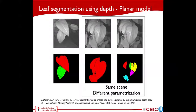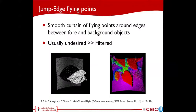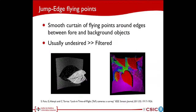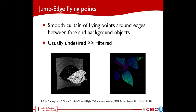In order to minimize the segmentation problem and better identify the different leaves of a plant, our approach takes into account the appearance of what is called the jump-edge flying points. Jump-edge flying points, a characteristic trait of time-of-flight cameras, are usually undesired points and therefore are filtered out. They are smooth curtains of flying points around the edges between fore and background objects. Identifying such points can give us information about the possible contour of the leaves. For more details, see the article by Fochetau, 'Lock-in Time-of-Flight Cameras: A Survey', published at the Sensor Journal.